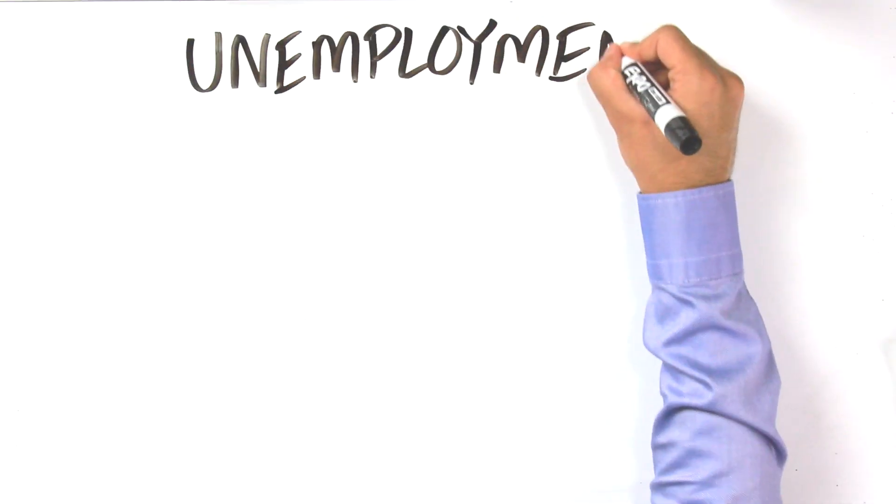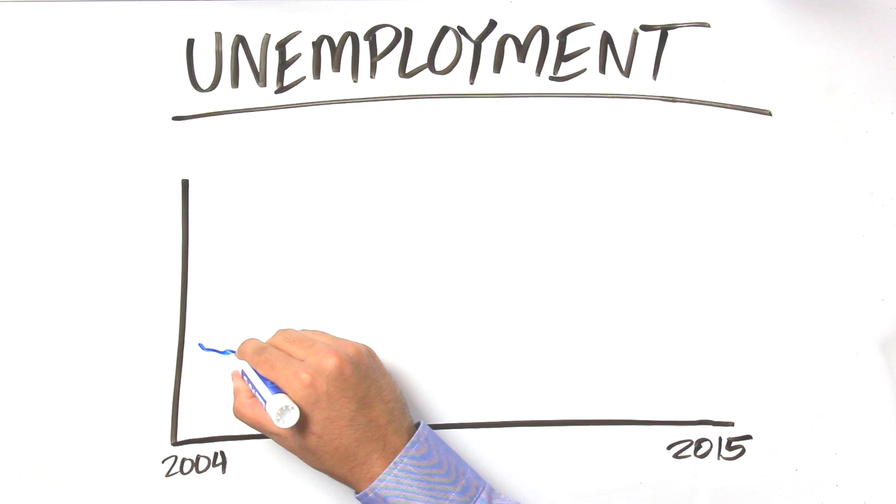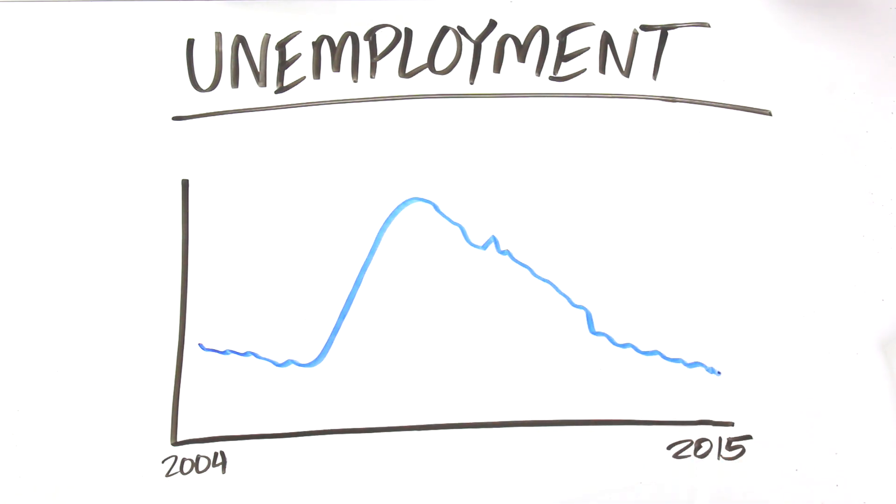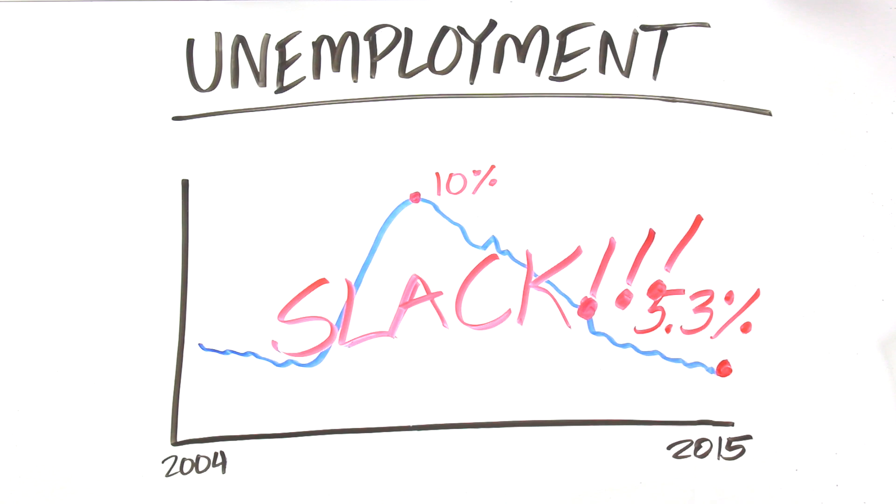First let's see what's going on with unemployment. The official rate is at 5.3%, just a little above what would be considered full employment. But some people tell us there is still a lot of slack in the labor market. What do they mean by slack?